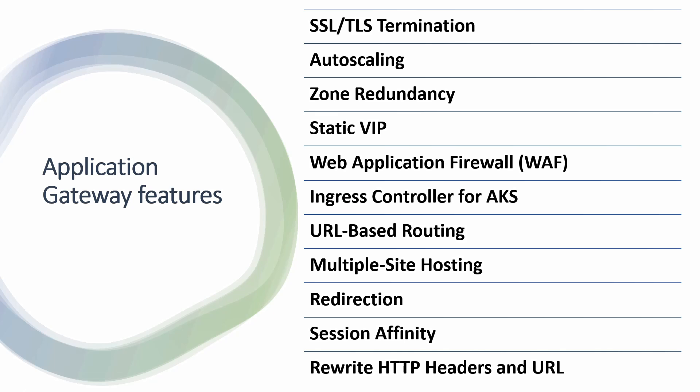Another feature is Web Application Firewall (WAF). During creation, Application Gateway provides an option to enable WAF, which protects your web applications from security threats like SQL injection and cross-site scripting. Another very useful feature is the ingress controller for AKS. Previously this support wasn't available, so you had to use NGINX ingress controller or third-party controllers. Now Application Gateway can be used for traffic routing and load balancing of containerized applications on Azure Kubernetes Service.